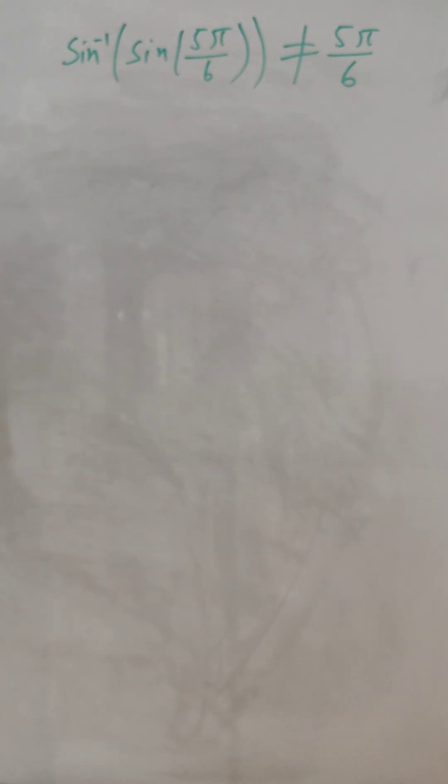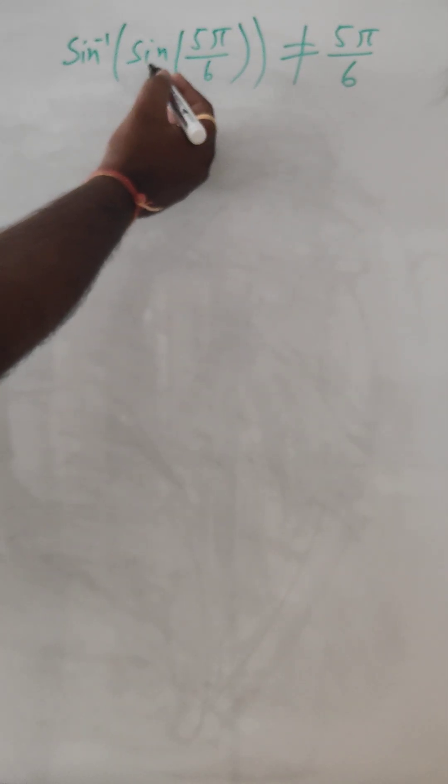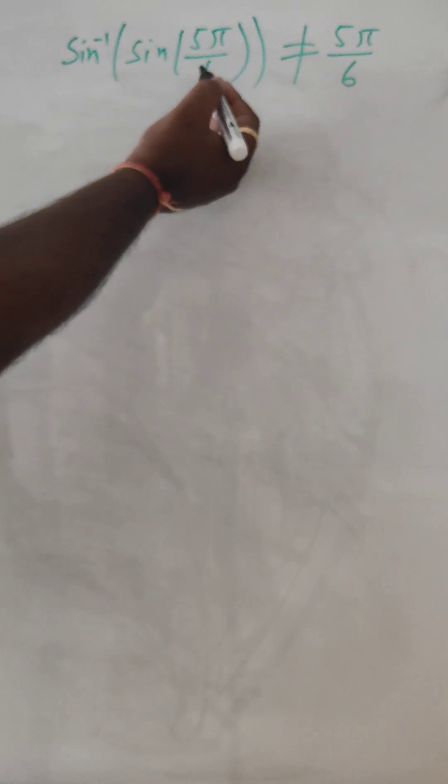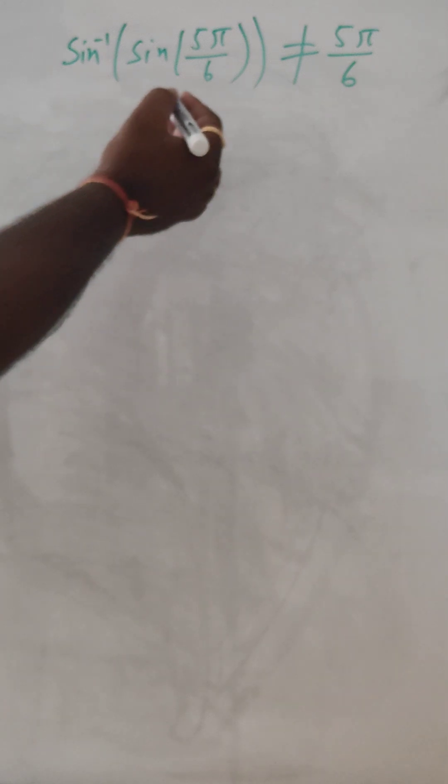We often make a mistake by directly and blindly assuming that the value of sin inverse sin 5π by 6 will be the answer. When sin inverse and sin are there with whatever value inside, we think the same value is the answer, but that is not always the case.